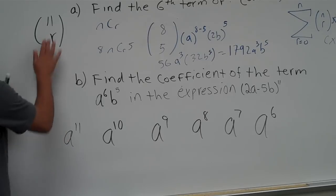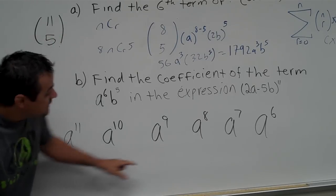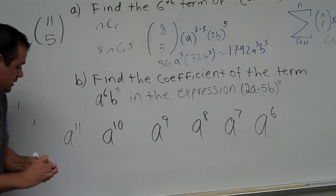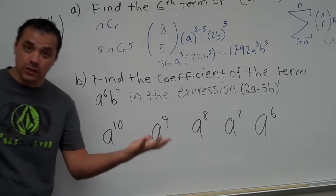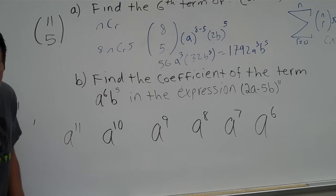So, this is actually 11 choose 5 because, yeah, it is the sixth term, but, remember, since we start counting from 0, it's actually n choose 5.